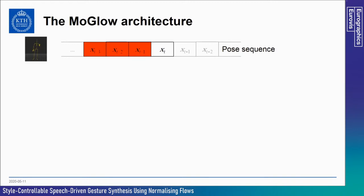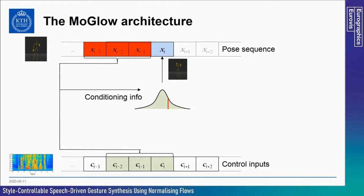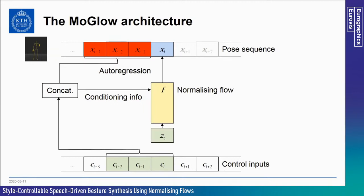We build on our previous work called MOGLOW, a general architecture for probabilistic controllable motion synthesis, which we adapt here for gesture synthesis. We automatically extract style features and synthesize gestures conditioned on both style and speech. Starting from a sequence of human body poses, our task is to generate the next pose probabilistically, conditioned on previous poses and external control signals — in our case speech and optional styles. MOGLOW is an autoregressive sequence model that uses normalizing flows to model this probability.